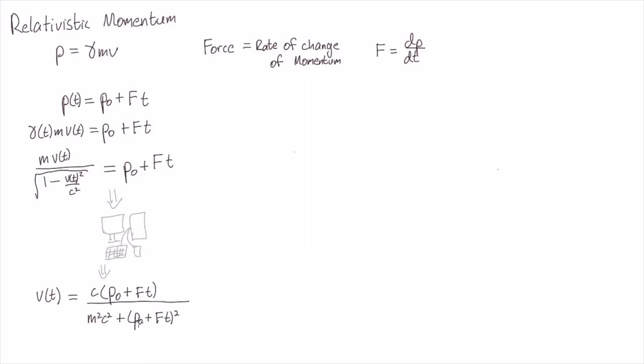So what does this mean? It means if we have an object of mass m and an initial momentum p0, and we apply a force f for a time t, we plug those values into the right-hand side, and then this tells us what velocity we end up with.